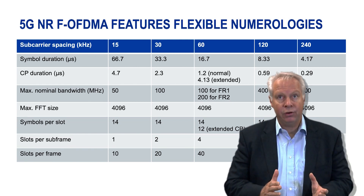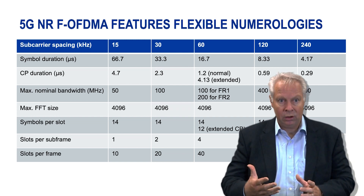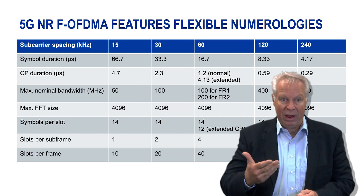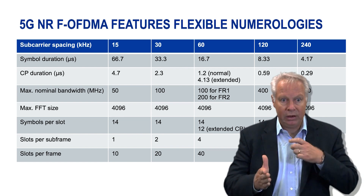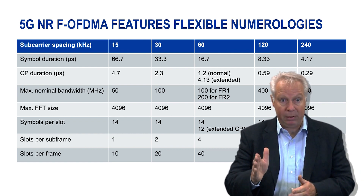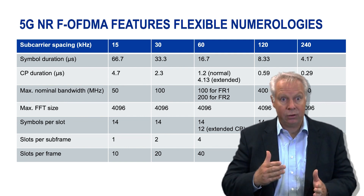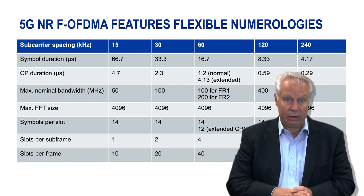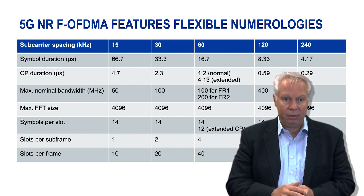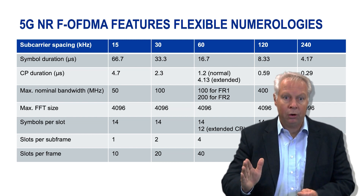5G offers great flexibility on the air interface. Based on the OFDMA waveform, we introduce a flexibility known as numerologies. In this table we can see different subcarrier spacings, and tied to the subcarrier spacings we have other parameters like the symbol durations, the slot duration, the maximum FFT size, etc. The flexibility is given that we could dynamically use different numerologies.